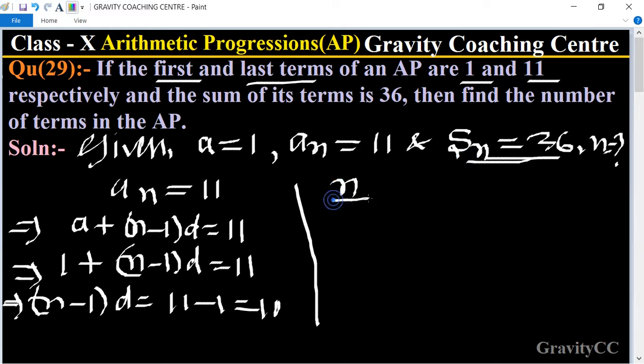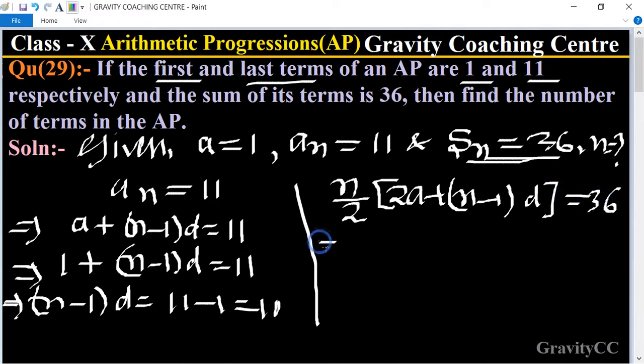Now using the sum formula: S_n equals n by 2 bracket of 2a plus (n minus 1)d equals 36. This implies n by 2, and the value of a is 1 and (n minus 1)d equals 10, equals 36.